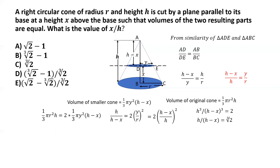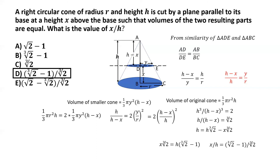Since all quantities are positive, we take the positive root. This allows us to express x in terms of h. Finally, x by h equals cube root of 2 minus 1, divided by cube root of 2. The correct answer is option D.